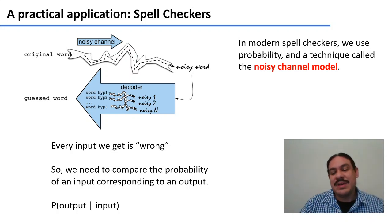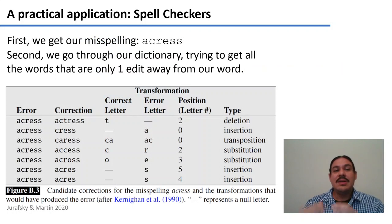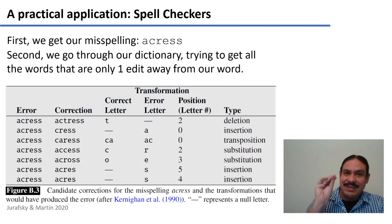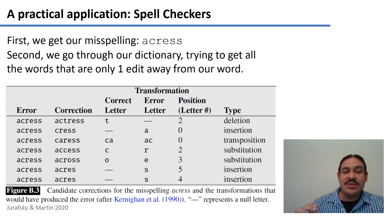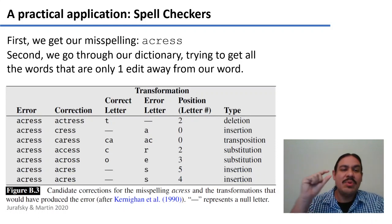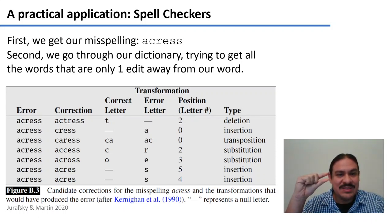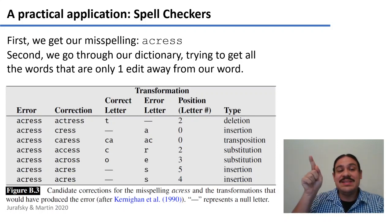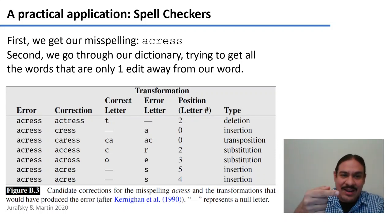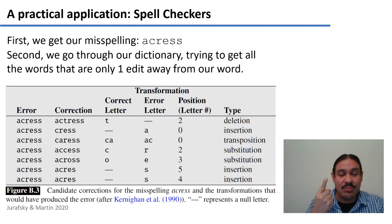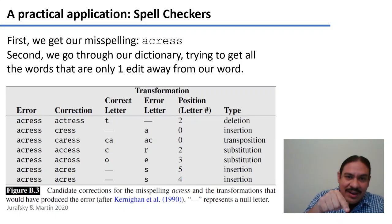There are several steps to calculating those probabilities. First, we get our word 'acris', and then we go through our dictionary trying to figure out which words are one edit distance away. For example, 'actress' is one edit distance away because you need to delete the 't' from 'actress' to get to 'acris'. The word 'cress', a kind of plant, is also one edit away because you would need to add an 'a' to 'cress' to get 'acris'. So all these are going to be our potential correction candidates.